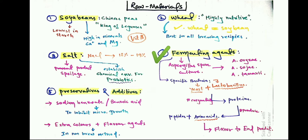Fermentation also occurs through the addition of specific bacteria — Lactobacillus and yeast — which enzymatically react with protein residues to produce a number of amino acids and peptides, including glutamic acid, aspartic acid, lysine, alanine, glycine, and tryptophan. These protein derivatives contribute to the flavor of the end product. Preservatives and additives used in the artificial brewing method include sodium benzoate or benzoic acid to inhibit microbial growth. Extra colors and flavoring agents are also added to the soy sauce to improve aroma and color.